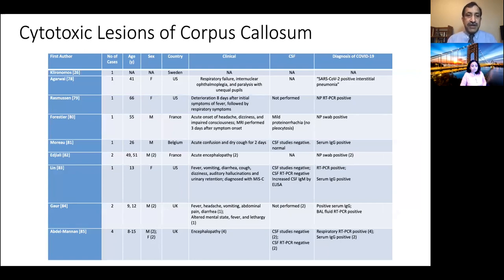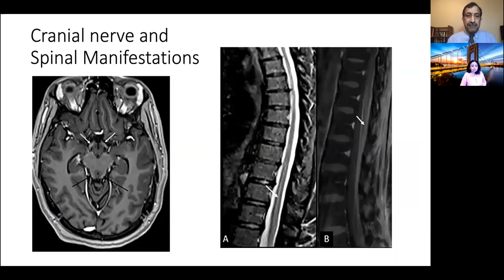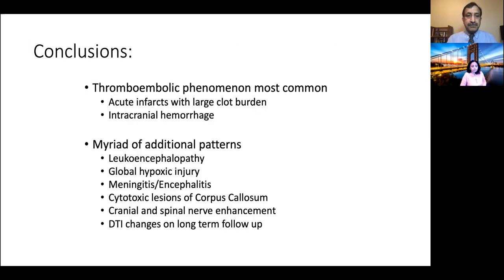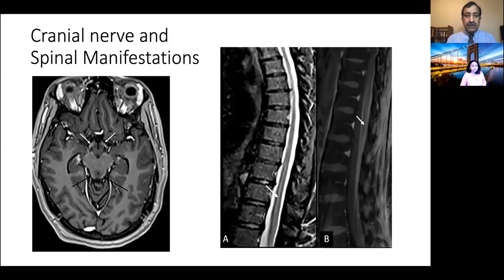Syndromes which have led to cytotoxic lesions of the corpus callosum have also been described, summarized in Table 4. Findings of cranial nerve and spinal nerve enhancement were also described in the literature and seen in our set of images. Also of note, T2 hyperintensity within the olfactory bulbs was described in patients with anosmia, although no image was shown in our particular paper.